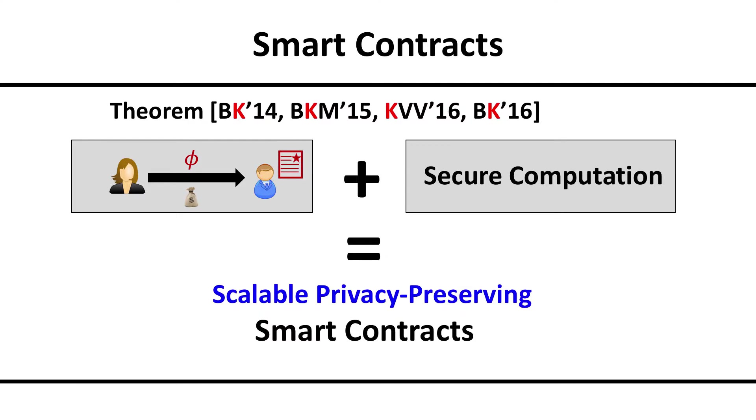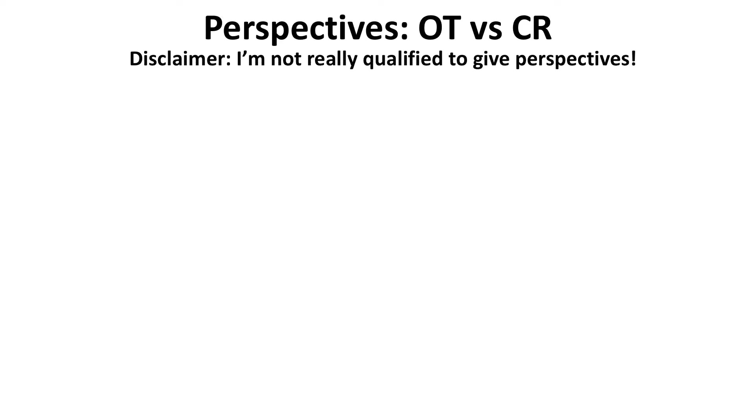The main theorem is that claim or refund transactions together with secure multi-party computation form a very powerful primitive. You can get smart contracts that are both scalable and privacy-preserving. When I say smart contracts, you can think of information exchanges or a game of poker as the applications to keep in mind. I won't have time to show the constructions, but it's better to give you perspectives by comparing this with a more familiar primitive.